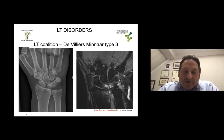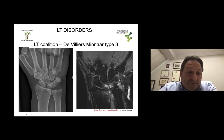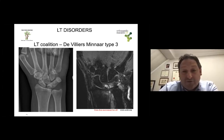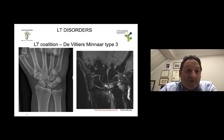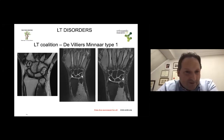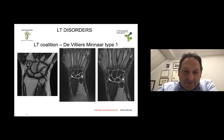Treatment is quite difficult because you don't have a lunotriquetral interval. Consider initially non-operative management including splinting and steroid injections. Surgical treatment becomes more intricate, especially because the lunate fossa of the radius may appear damaged. You need to carefully consider options because these patients usually have quite a good range of motion, so any bony surgery needs to be carefully discussed with the patient, balancing pros and cons very carefully. Type 1 cases are more subtle — you may not identify them initially, but over time with practice as you see more of these coalitions you will get used to it.